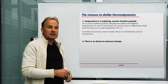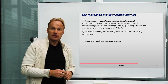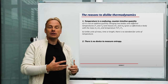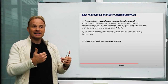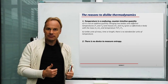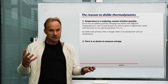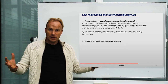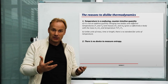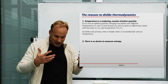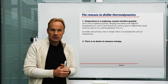Reason number one is that thermodynamics operates with temperature, and temperature is a counterintuitive concept. It's not an additive quantity. If you have two bodies with temperature T1 and T2, you bring these two bodies together and you cannot say what the temperature of these two bodies will be afterwards.